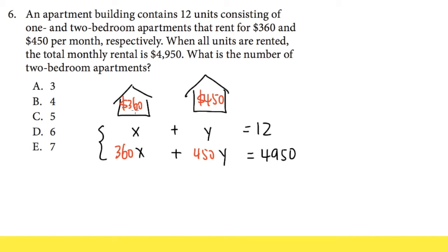The elimination method means that we are going to somehow get rid of one of the variables. We can get rid of the x or we can get rid of the y, once again up to us. But that refers back to the question. It says we would like to know the number of two-bedroom apartments, and that's this right here. The y represents the two-bedroom apartment. This is the one-bedroom apartment. Well in this case, I do not want to get rid of the y because I want to solve for y. Let's get rid of the x.